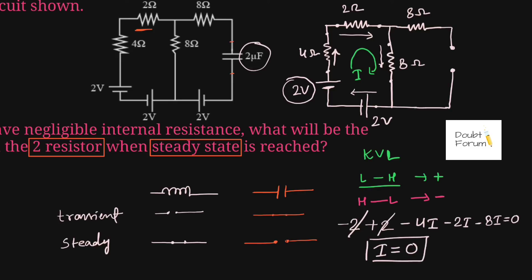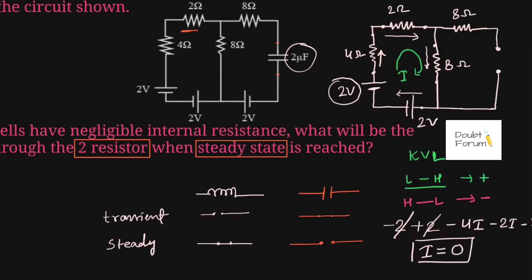So in the steady state, no current would flow through this 2 ohm resistor, and its value would be 0. Thank you for watching. If you still have any doubt, please let me know in the comment section, and don't forget to subscribe to our channel Doubt Forum. See you in the next video. Take care, bye-bye.